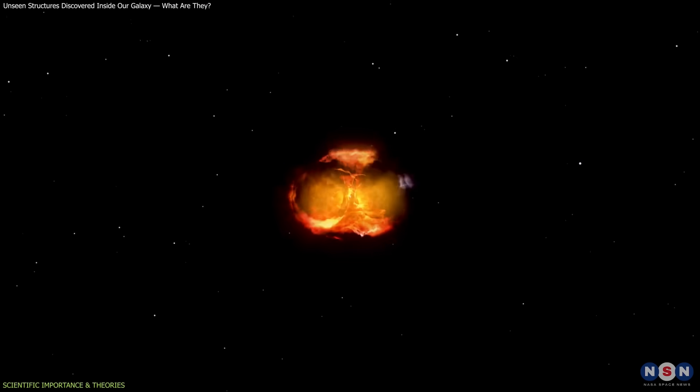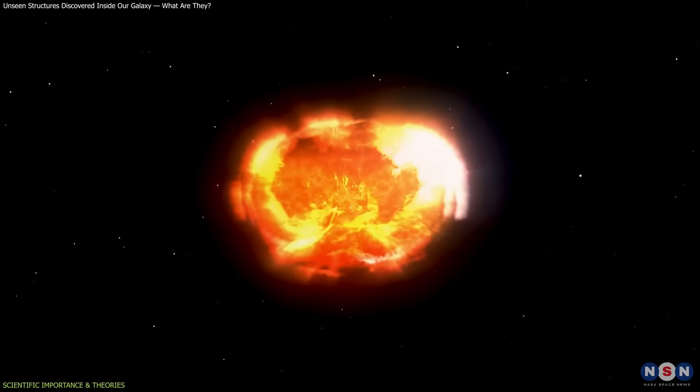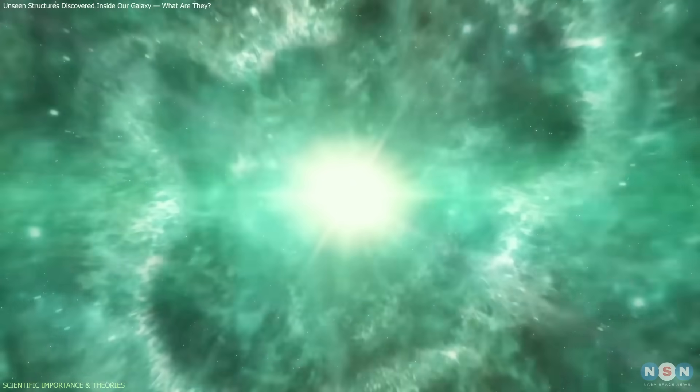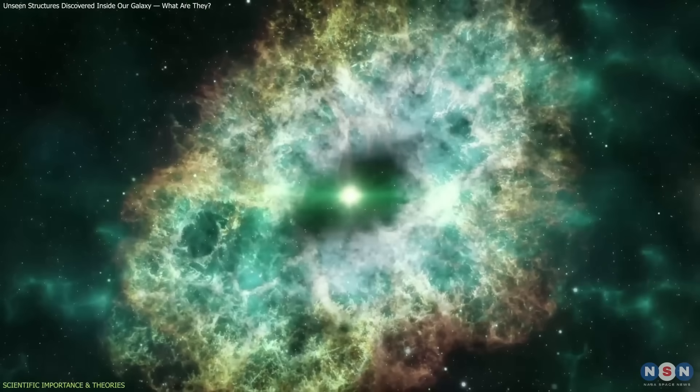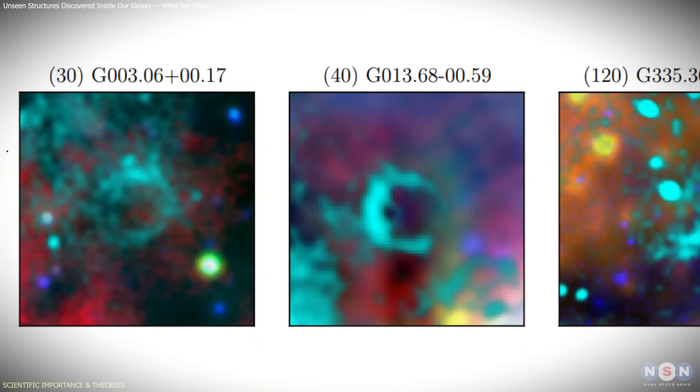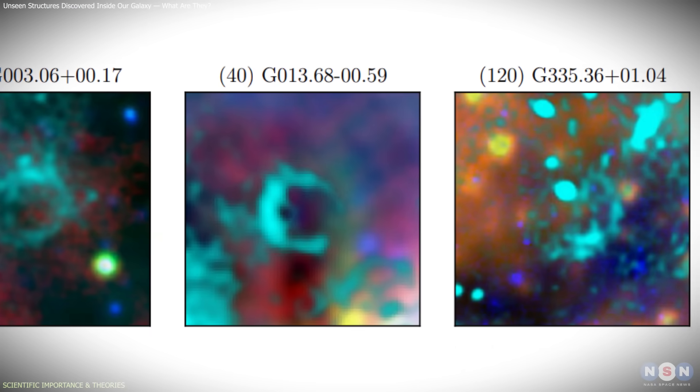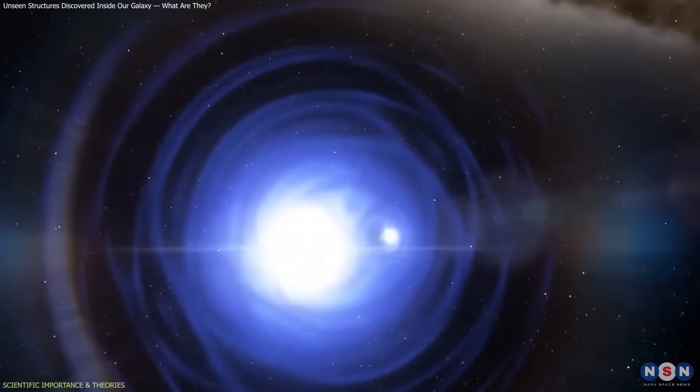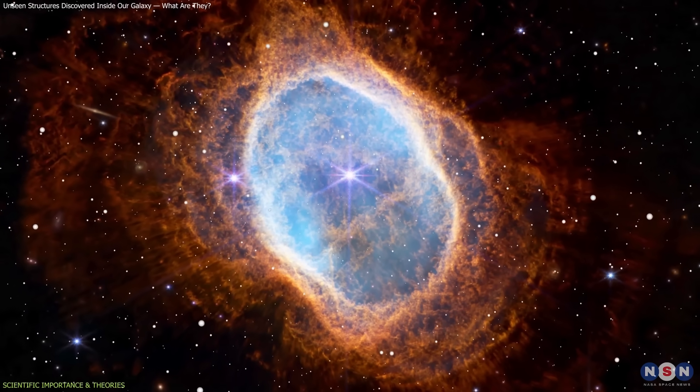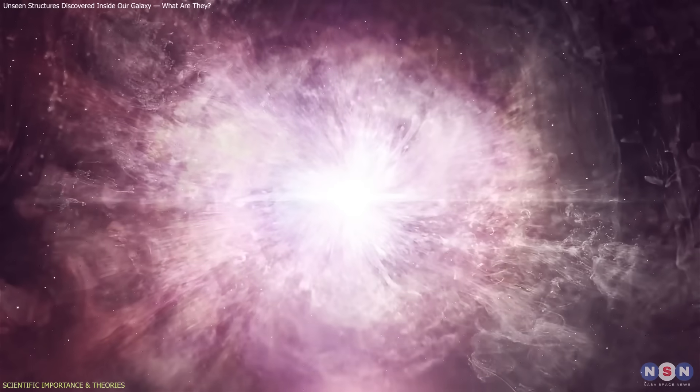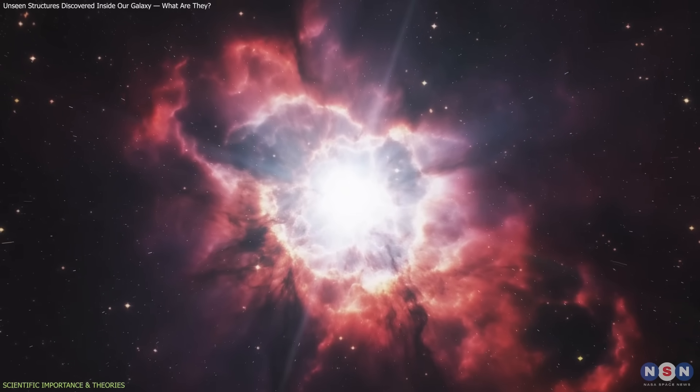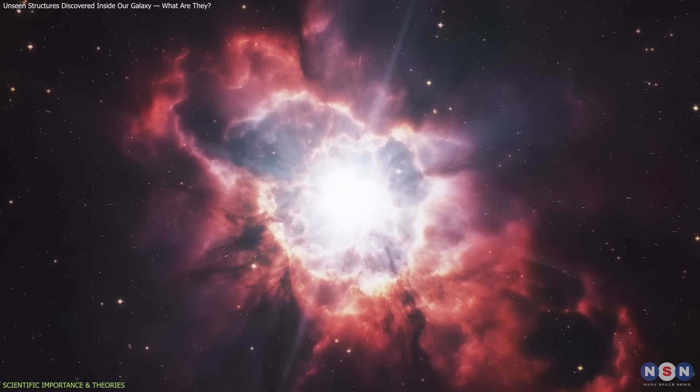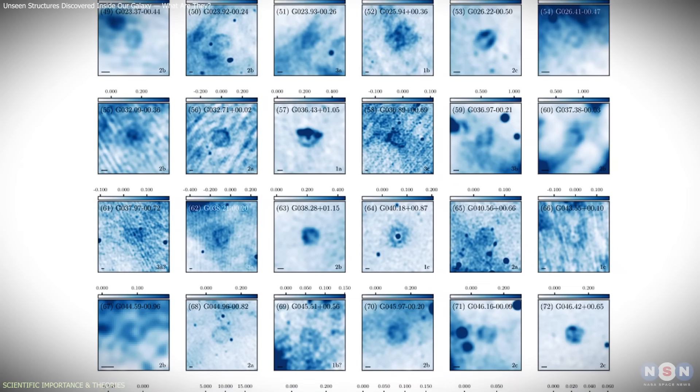Another explanation points to novae and supernova remnants. Explosive outbursts can produce roughly circular shock fronts that persist for thousands of years. Some of the newly detected rings likely fall into this category. A third scenario involves massive stars, such as Wolf-Rayet stars or luminous blue variables. Their intense stellar winds can sculpt circular shells, sometimes well before the star reaches the end of its life. These shells often emit in both infrared and radio frequencies, matching the properties of many of the observed rings.